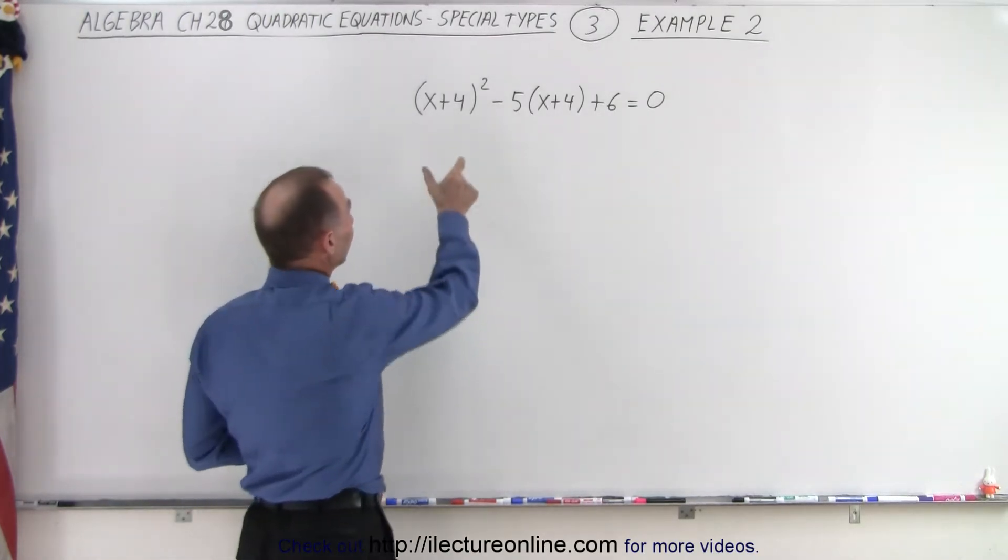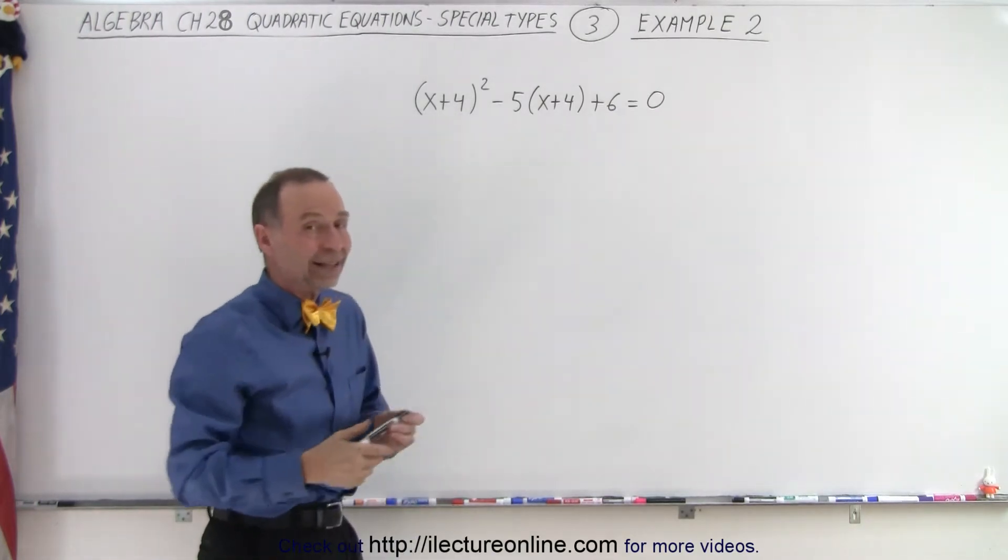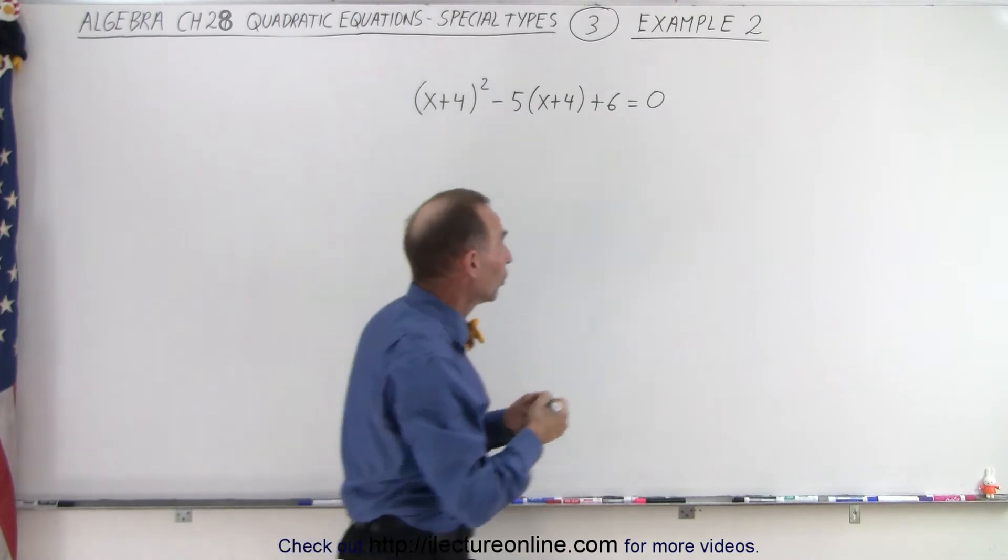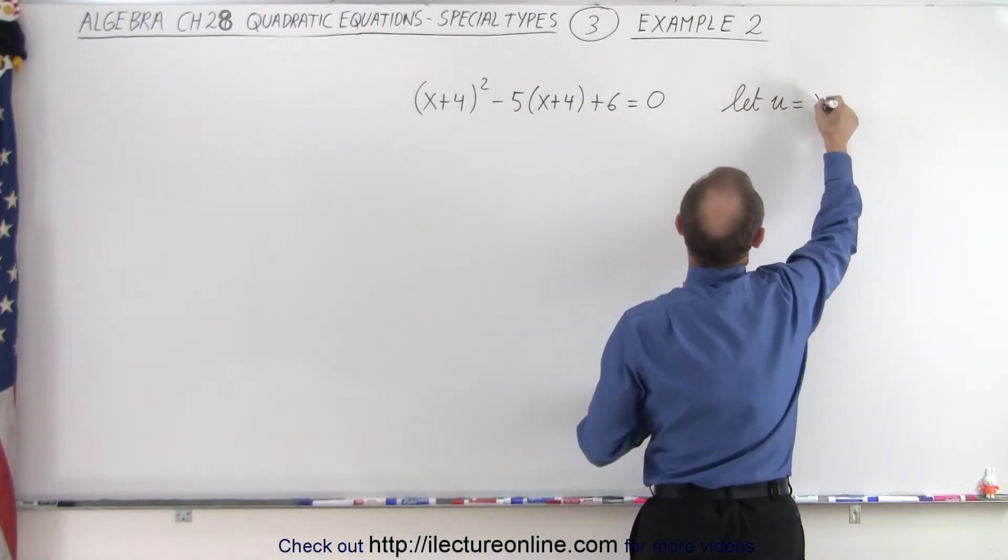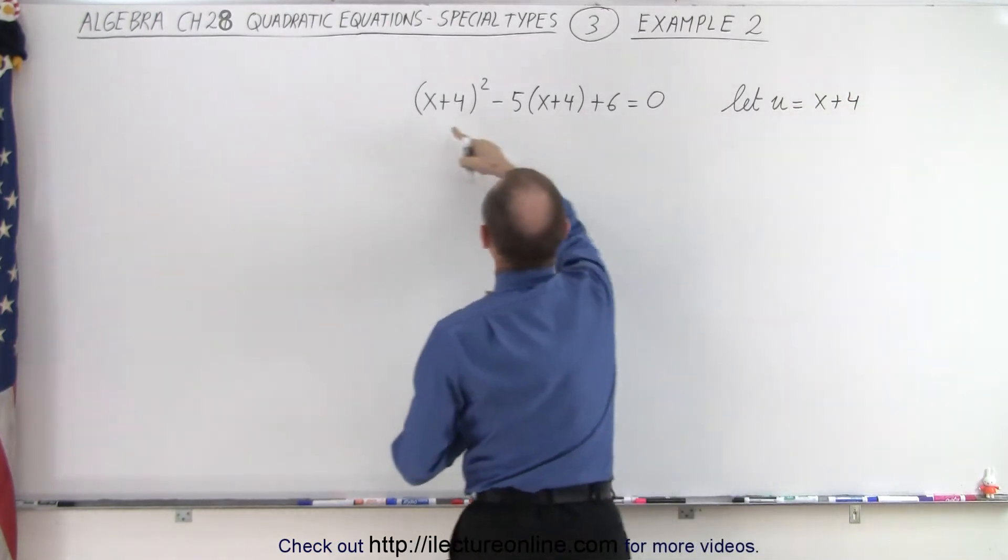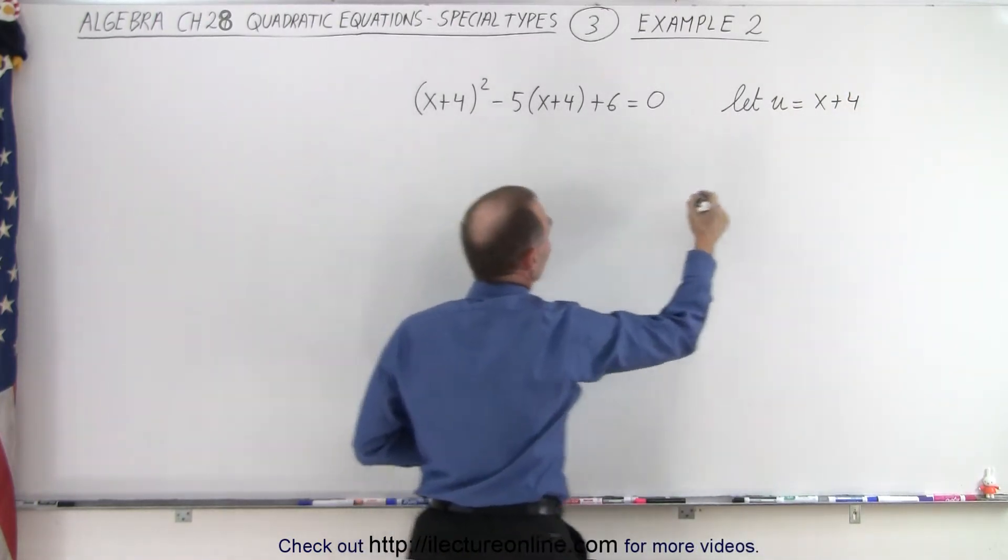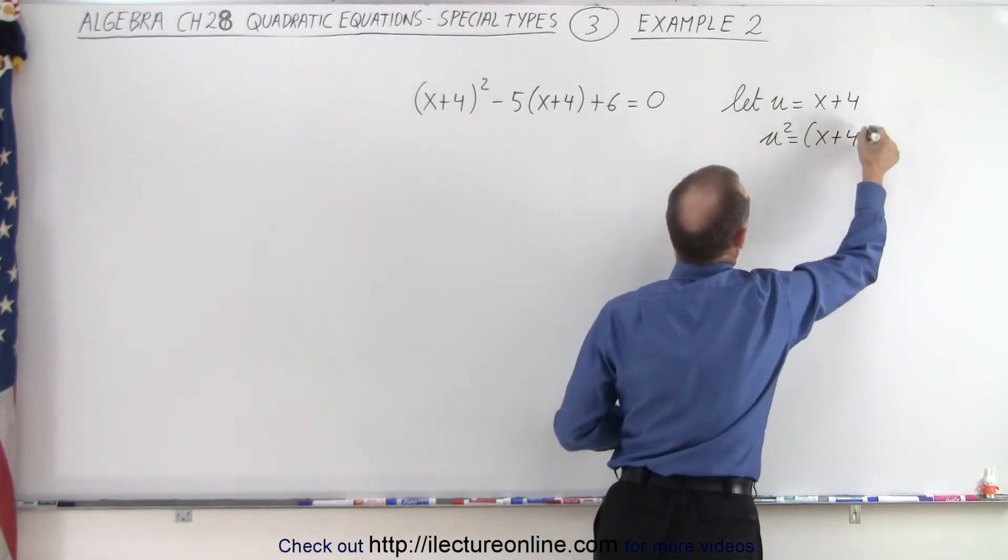Notice that if we exchange x plus 4 for another variable, we can make this look exactly like a quadratic equation. So we're going to make the substitution, let u equals x plus 4. And then of course, x plus 4 squared is equal to u squared. So we can say that u squared is equal to x plus 4 squared.